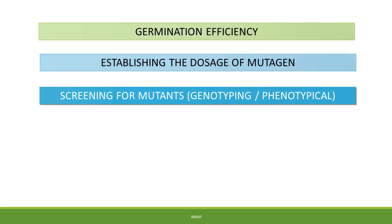The third aspect involves screening, which is dependent on selection based on phenotypical traits or on the basis of genotypes. For instance, one can mutate a sugarcane plant and ascertain the phenotypic variation in terms of the yield of sugar per plant, or mutate a low-yielding variety of a specific plant and determine the number of mutants in terms of yield per plant.